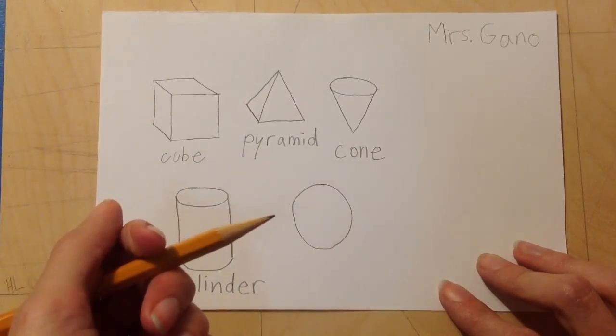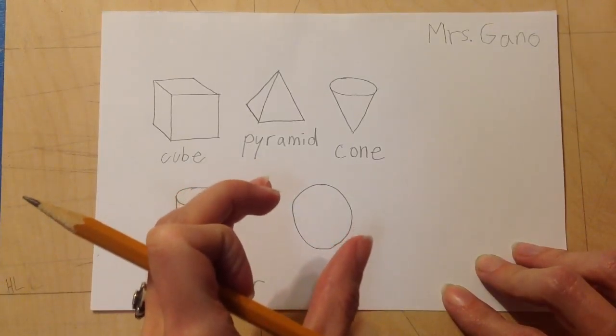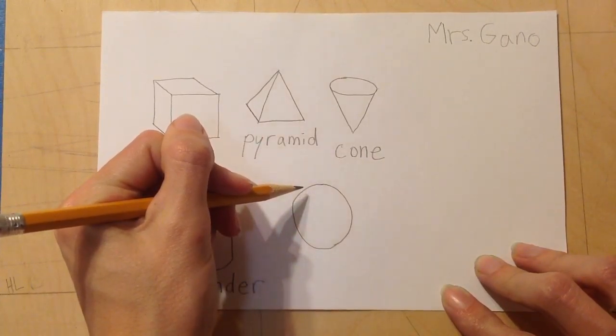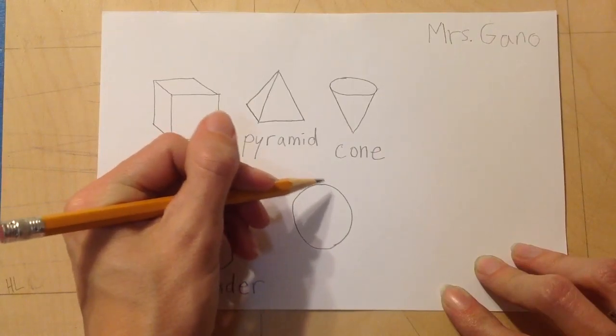So I'm going to add a little bit of shading to it to make it look more like a ball that's coming off the page. So I have to think of one side as being brighter, like light is shining on it.